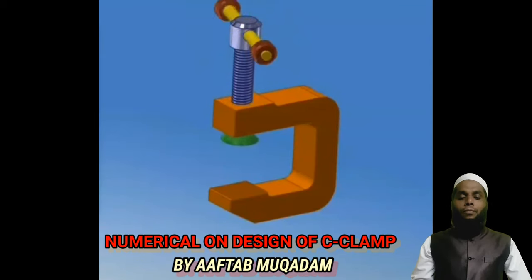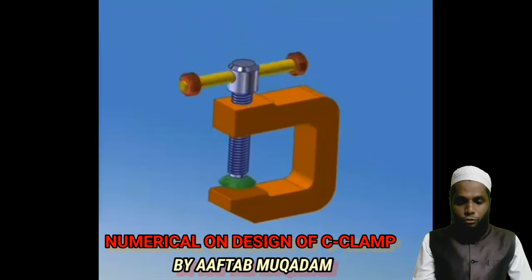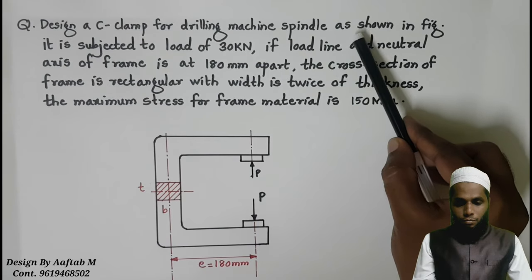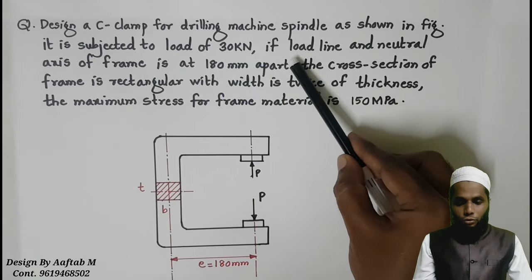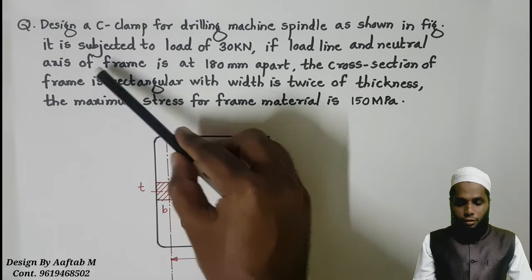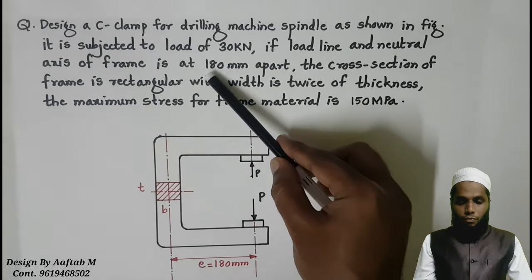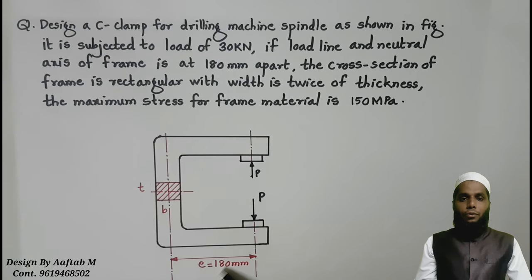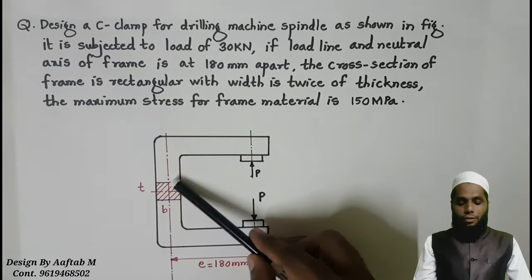Just have a look at this problem. The statement is: design a C-clamp for drilling machine spindle as shown in figure. It is subjected to load of 30 kN. If load line and neutral axis of frame is at 180 mm apart, the cross section of frame is rectangular.